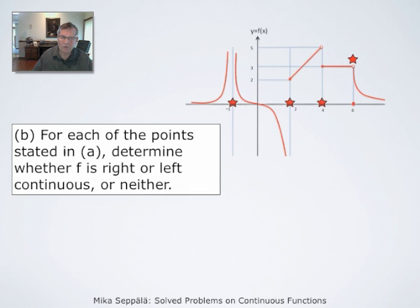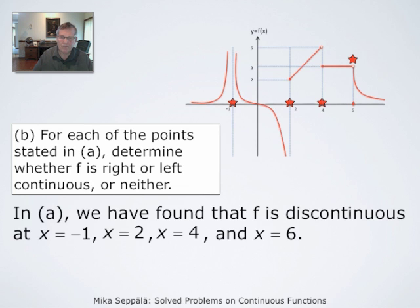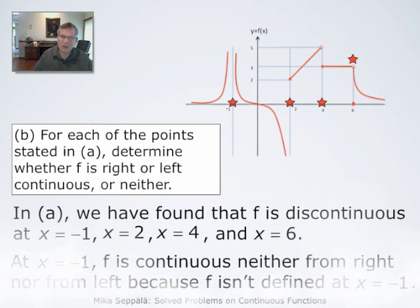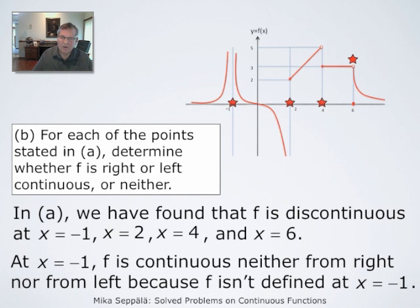From this graph, we have to figure out whether f is right or left continuous at these points of discontinuity, or neither. Clearly, f is discontinuous at x = -1 because it is not even defined there, at x = 2 because the values of f jump, at x = 4 for the same reason, and at x = 6 because the limit is not the value of the function. At x = -1, the function f does not have finite left or right limits, and the function is undefined there. Therefore, at x = -1, the function is neither left nor right continuous.